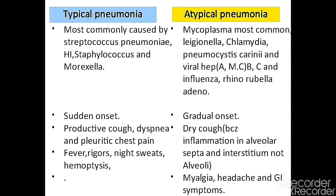Typical pneumonia presentation: sudden onset, productive cough due to consolidation, dyspnea, pleuritic chest pain, fever, rigors, night sweats, and hemoptysis can also be present.